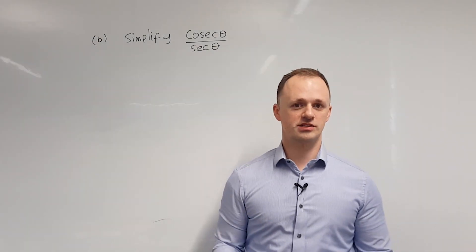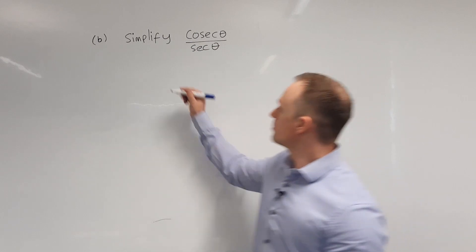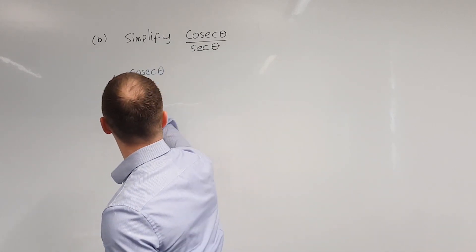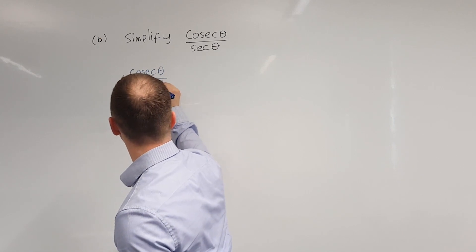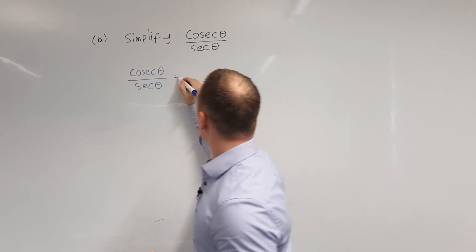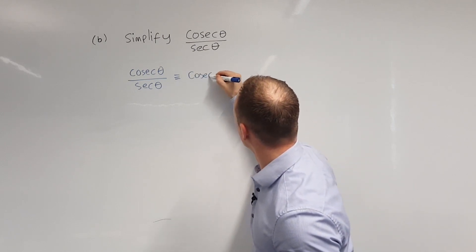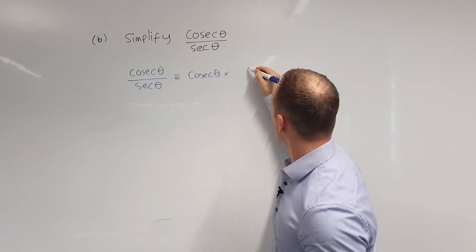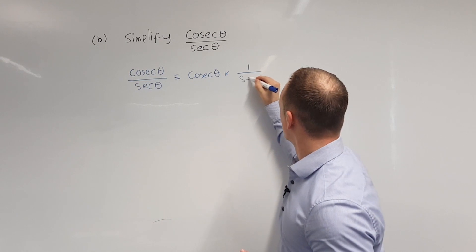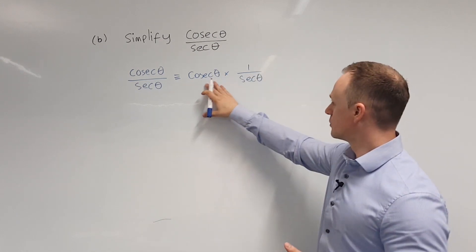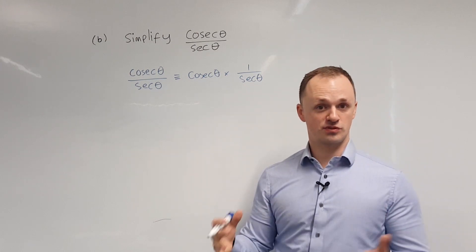So here we have cosec theta over sec theta. What I'm going to do first is not strictly necessary but I'm going to separate this out into two separate fractions. So I'm going to write this as cosec theta multiplied by 1 over sec theta. From here I'm then going to write cosec and sec in terms of sin and cos.